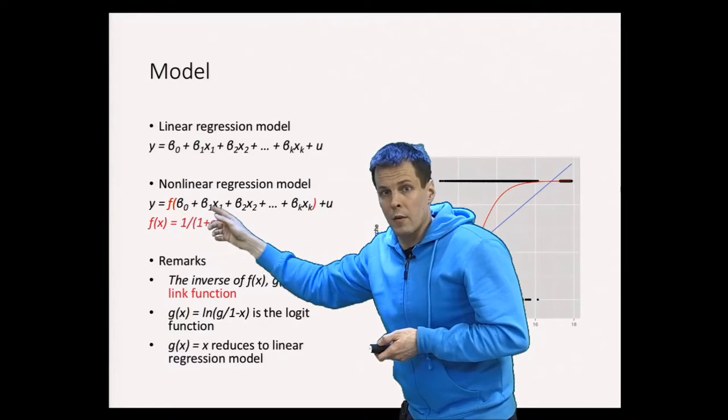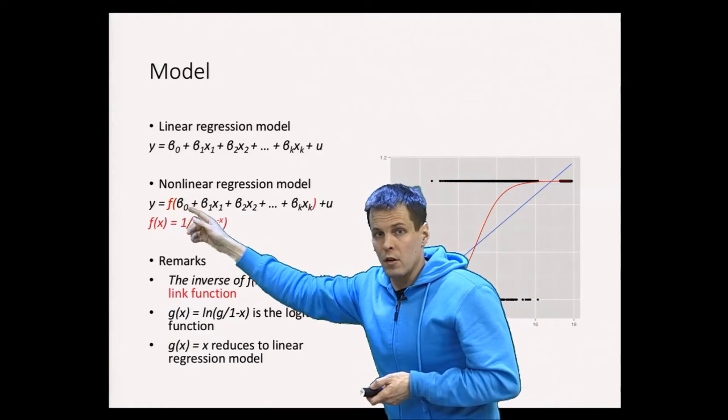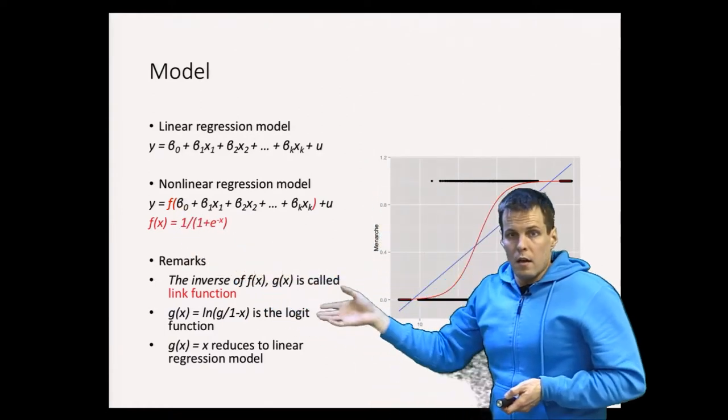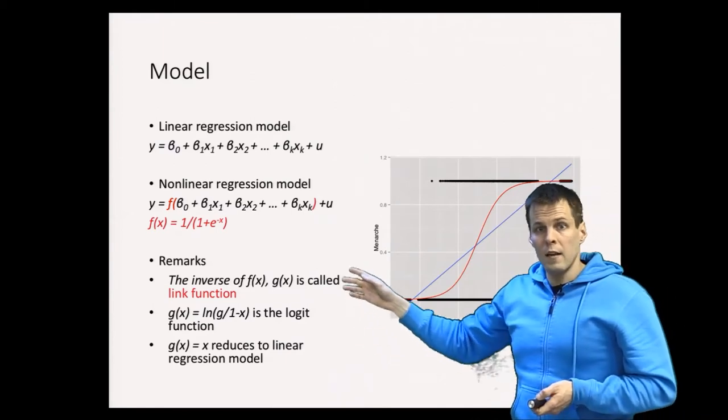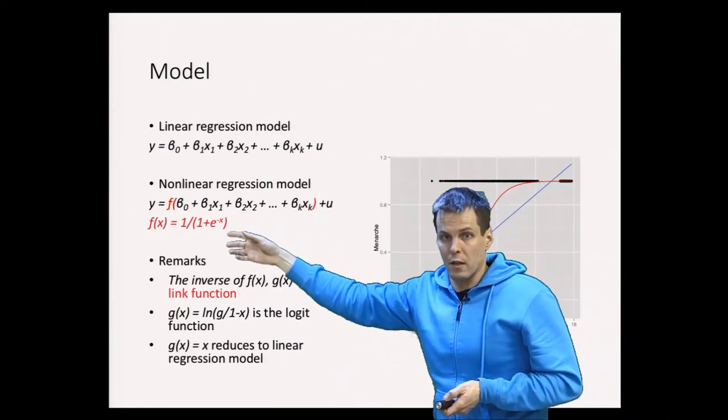So we calculate the linear prediction using the observed data, and then we take a function here which gives us the logistic curve. And the inverse of this function is called the link function, and that's the logistic function, and this is the inverse.